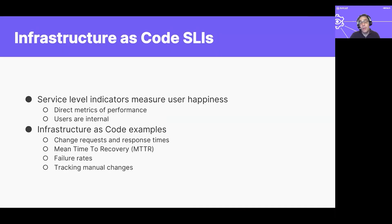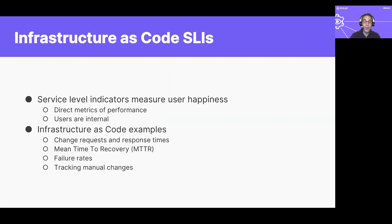Service level indicators measure our users' happiness with what we're providing. These are direct metrics of performance. Even though our users are internal, we still need to track our good events and our bad events. Infrastructure as code usually tracks to things like change request or response times, or mean time to recovery in the event of a failure. We need to track both successful and unsuccessful changes as they happen. Sometimes this can provide a window to tracking manual changes, which we really don't want in an infrastructure as code environment. If possible, we want to link our configuration management changes with our monitoring results, as they may be correlated to help relate causes of incidents.